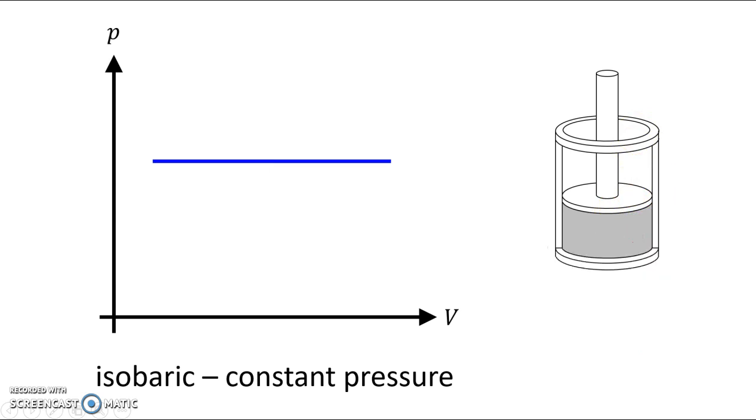The other way we could do this is by having an isobaric compression. So the volume will decrease. We're going from a bigger volume down to a smaller volume. How do we do that? We cool the gas, and we let that piston slide down.